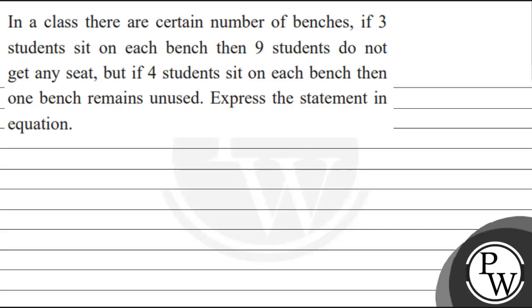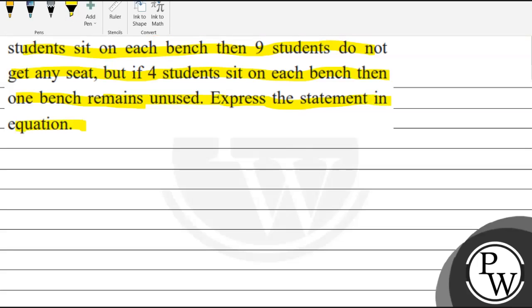The question says that in a class there are a certain number of benches. If three students sit on each bench, then nine students do not get any seat. But if four students sit on each bench, then one bench remains unused. We need to explain the statement as an equation.